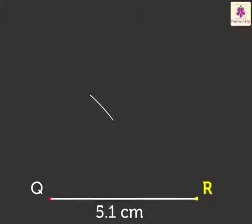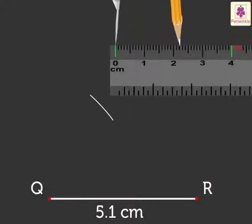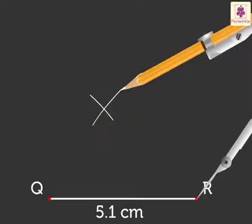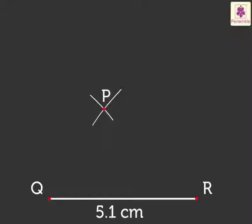Step 3. With R as center and radius of 4.3 cm, draw an arc to cut the previous at point P. Step 4.